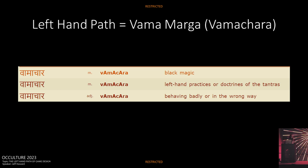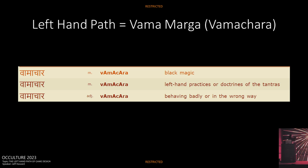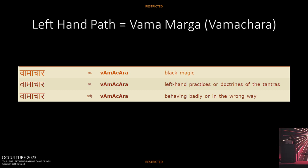Left-hand path is Vamamarga — left-handed attainment, sometimes transliterated as Vamachara. There's an online Sanskrit translator, and I love the three translations of Vamachara: black magic, left-hand practices or doctrines of the tantras. And my favorite: behaving badly or in the wrong way.